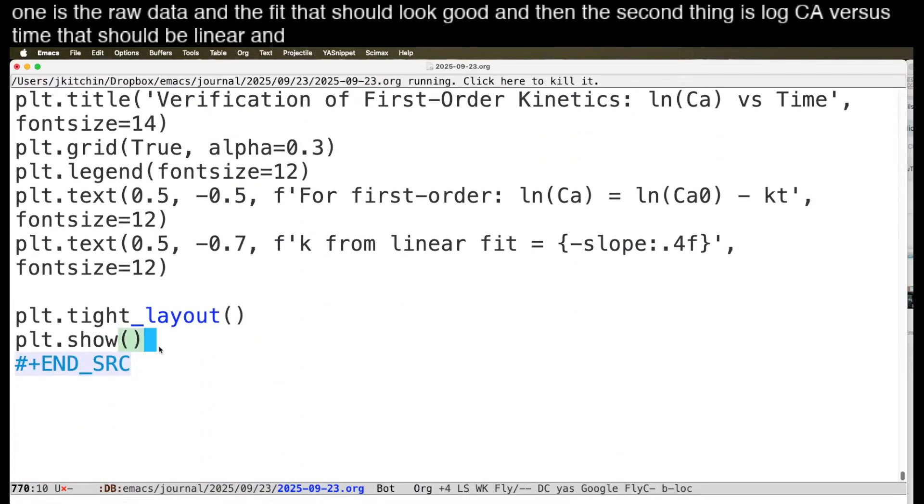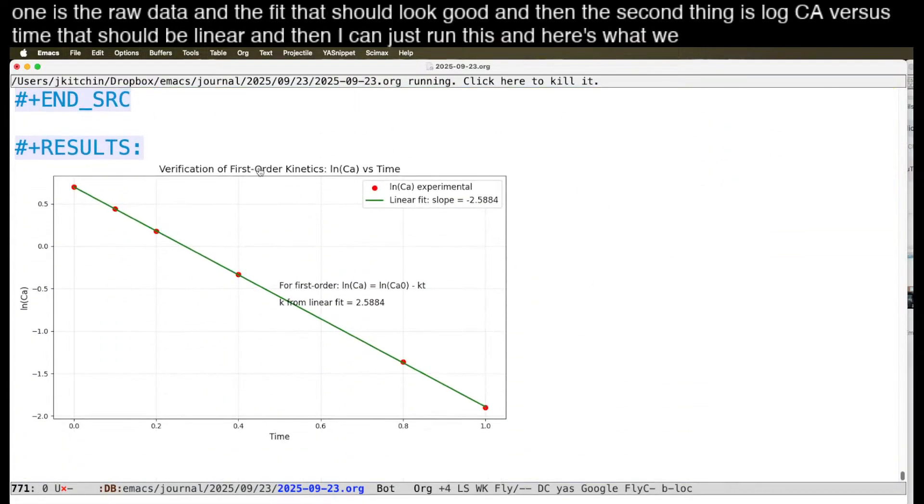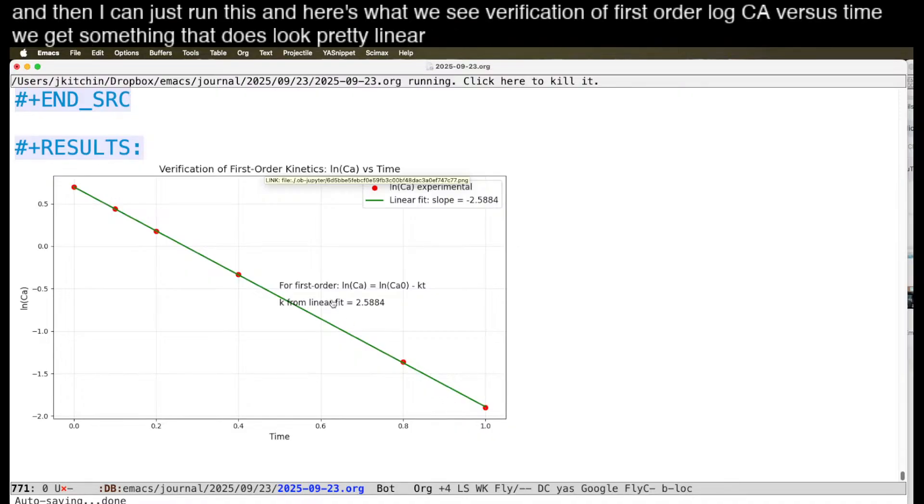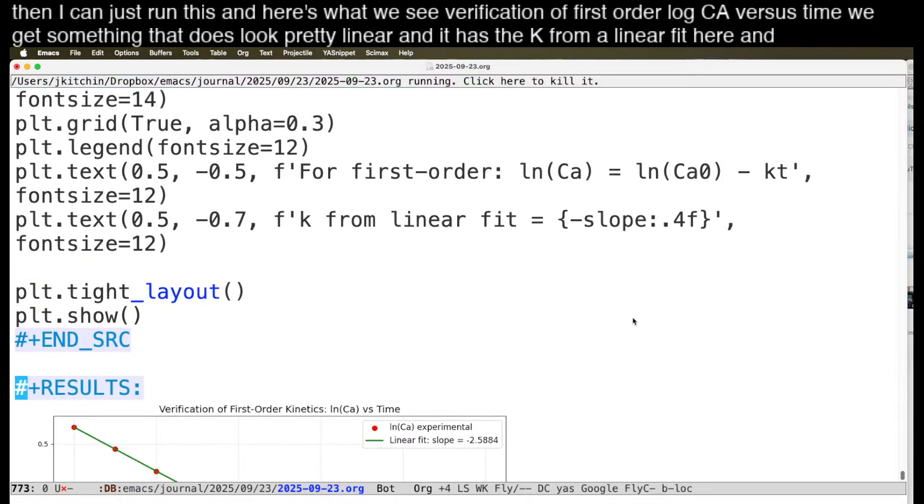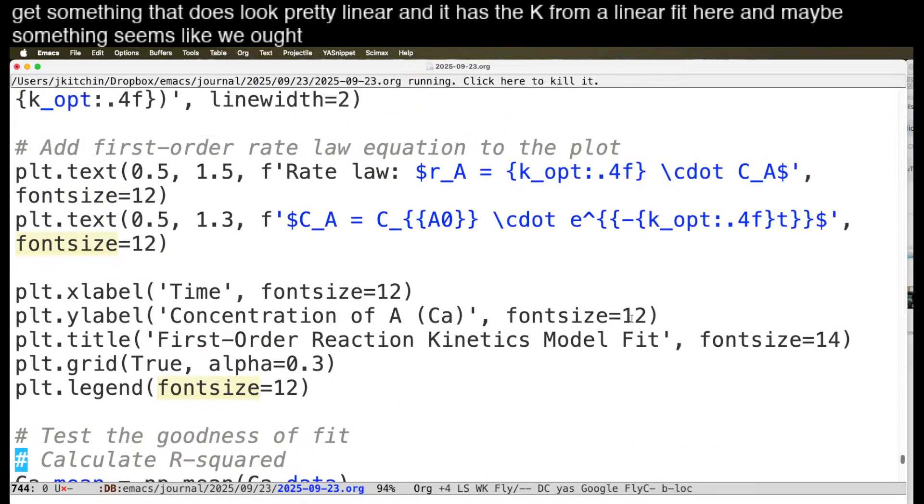And then I can just run this. And here's what we see. Verification of first order. Log ca versus time. We get something that does look pretty linear. And it has the k from a linear fit here. And maybe something seems like we ought to have more than one plot here.